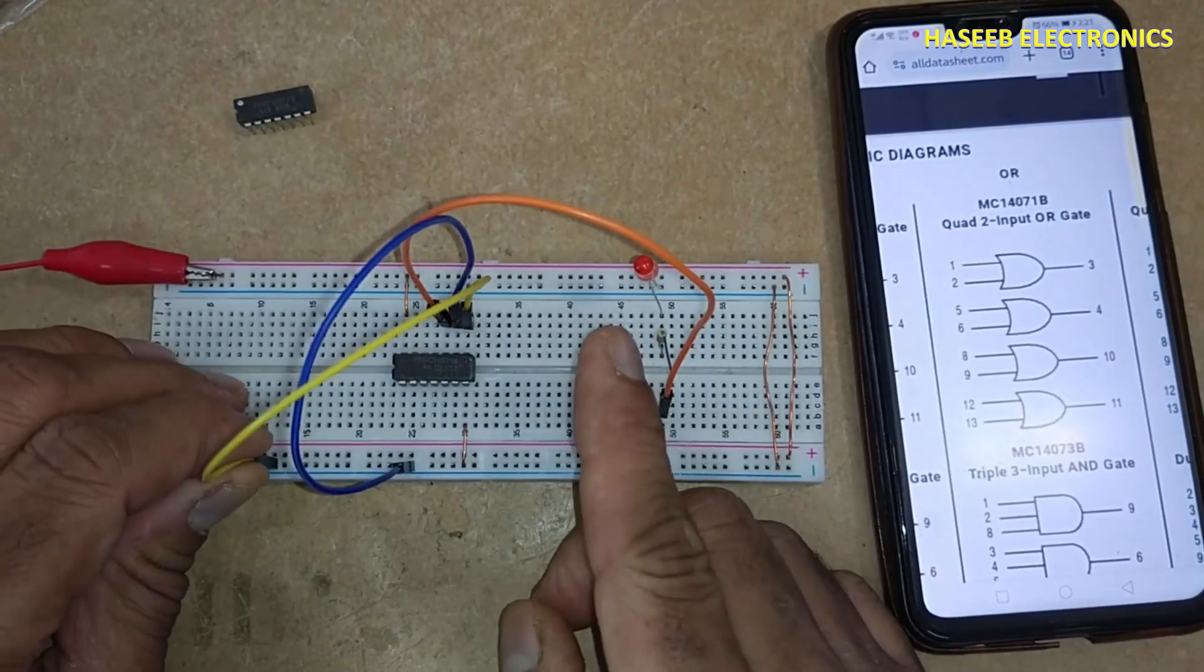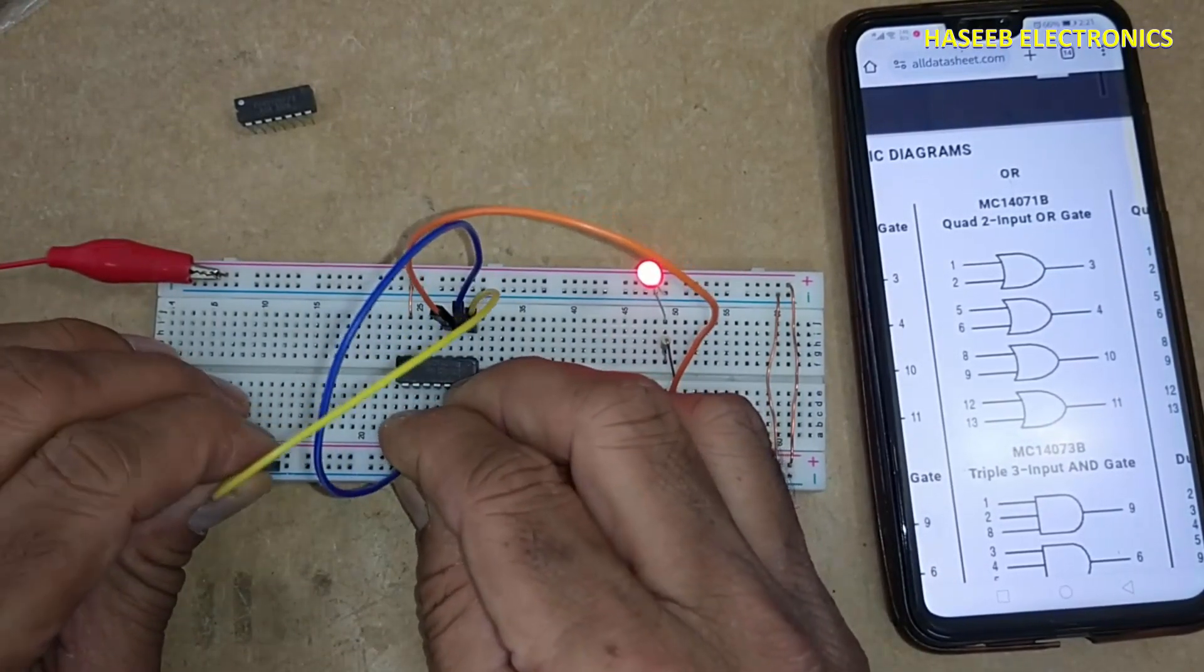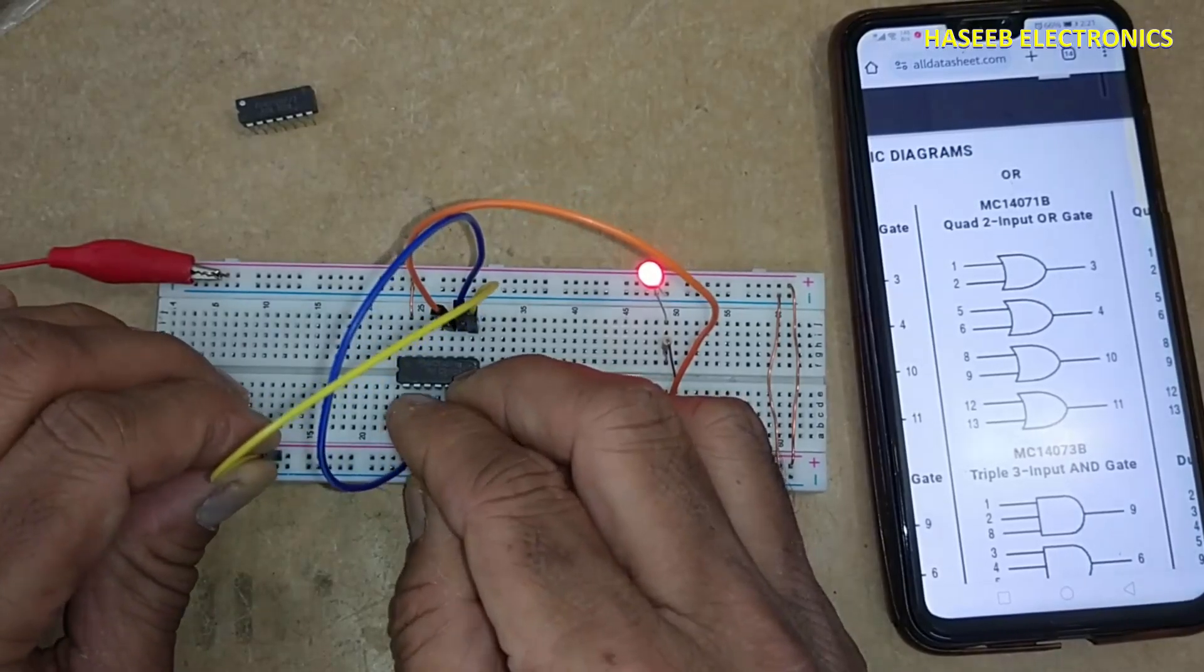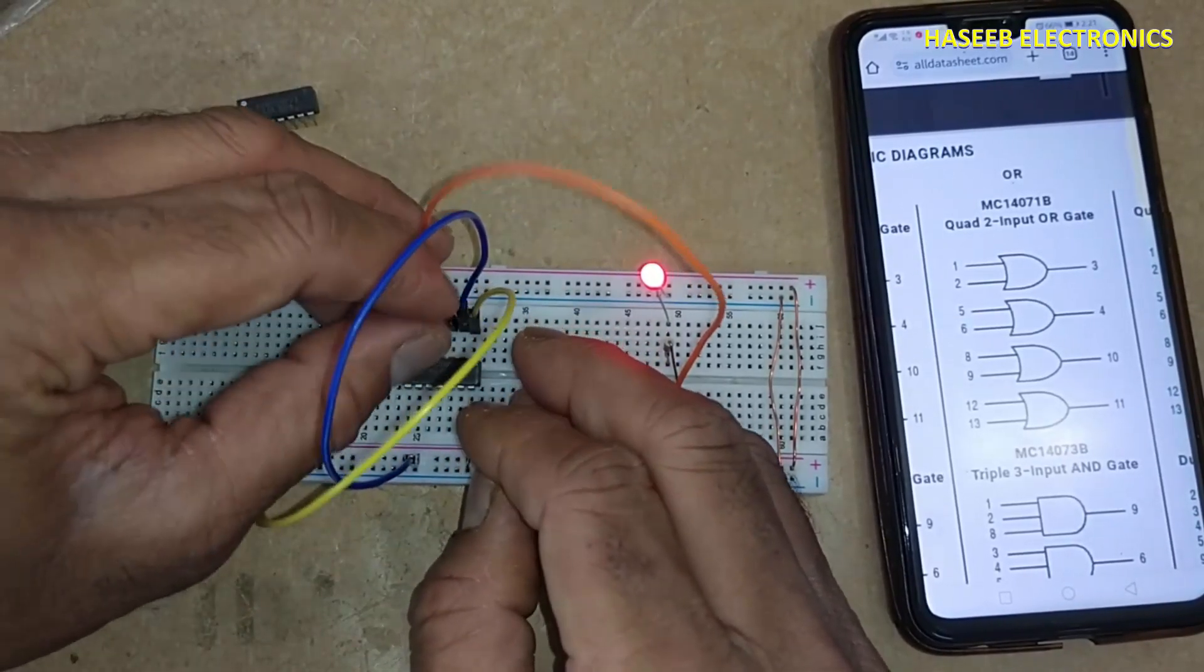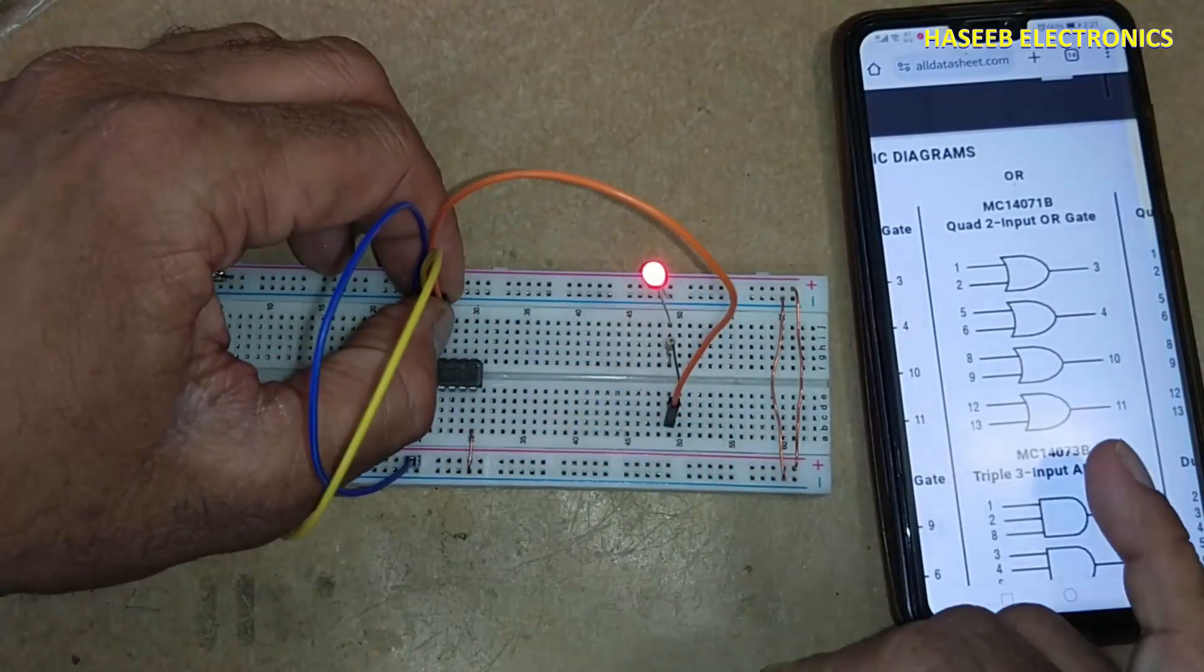All low, output low. One high, any one high, all high, output high. Last gate output from pin number 11.